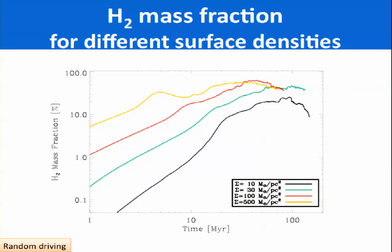I don't want to show many results since there's no time and it's not the focus of this meeting. I just want to point out this one finding: we ran models with different gas surface densities, and what we find — in agreement with observations — is that the H2 mass fraction scales with the surface density of the gas disk. If you go to high gas surface density disks, like 500 solar masses per square parsec, which is the case for high-redshift disks, then you end up with a disk which can be fully molecular, or a significant fraction of it is in molecular form.